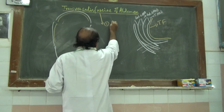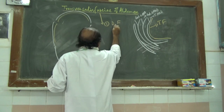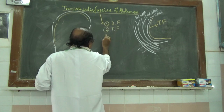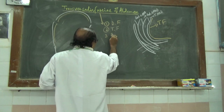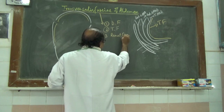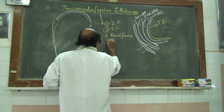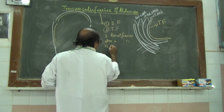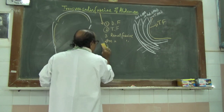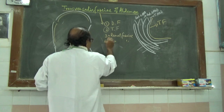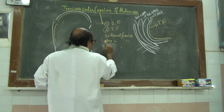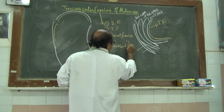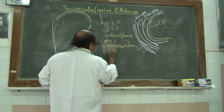The transversalis fascia of the abdomen has got four positions or names: one is the diaphragmatic fascia, second would be the transversalis fascia proper, third would be the renal fascia or pre-renal fascia, and fourth is the vertebral fascia or pre-vertebral fascia.